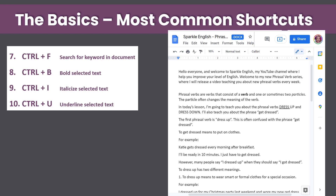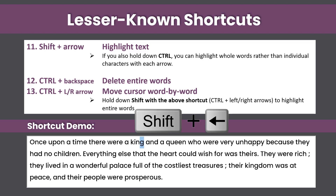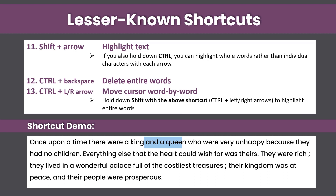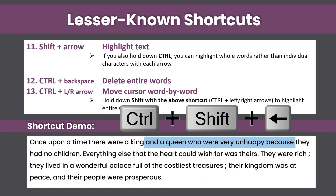Now I'm going to get into some of the lesser-known shortcuts. The first is Shift plus Arrow. If you hold down Shift and press either the left or right arrow key, you can see it highlights character by character — left or right. If you also hold down Ctrl along with Shift, you can highlight word by word, either to the right or back to the left. This is helpful if you want to erase a paragraph or make quick selections.